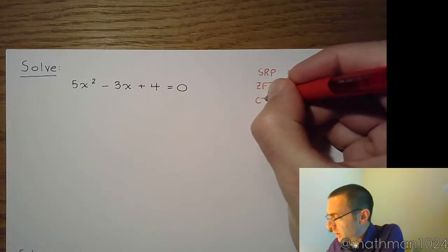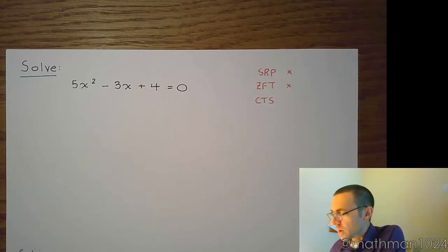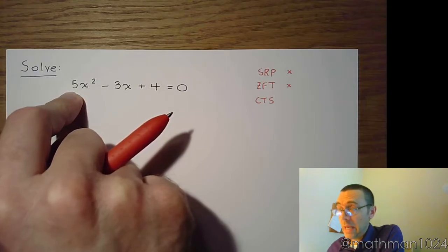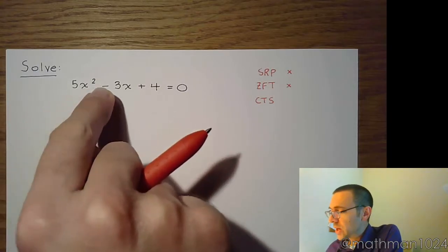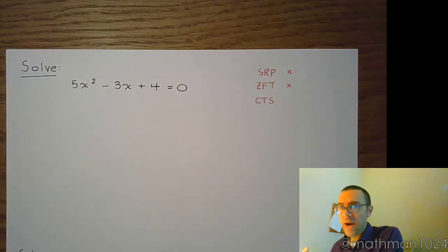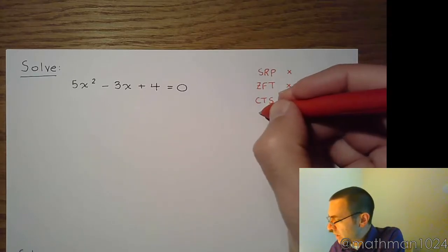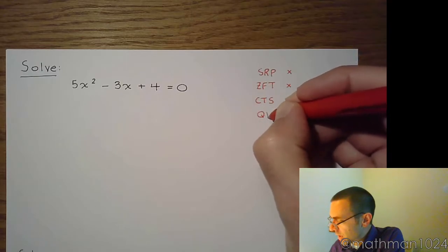Well, what about completing the square? Completing the square wants you to have a lead coefficient of 1. We don't have that, but we can get it. We would have to divide everything here by 5, that gives us fractions. Now, we don't really want to do completing the square with fractions. We can, but there's an easier way to do that. So since completing the square isn't going to work out nicely, then we land at the quadratic formula.